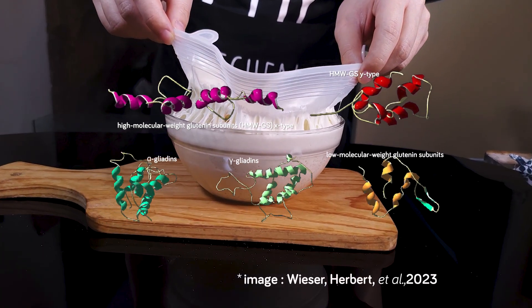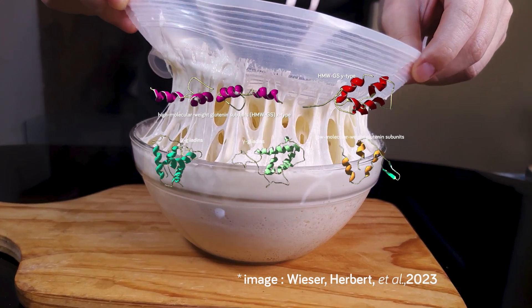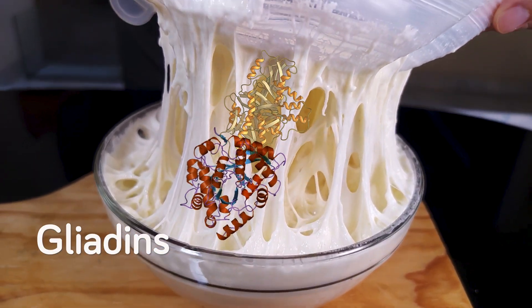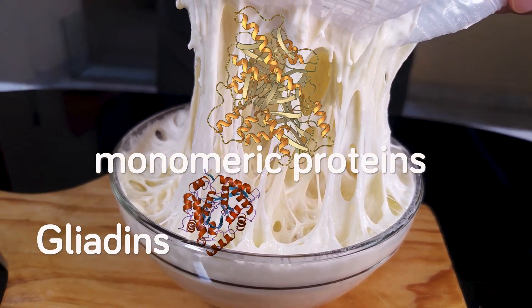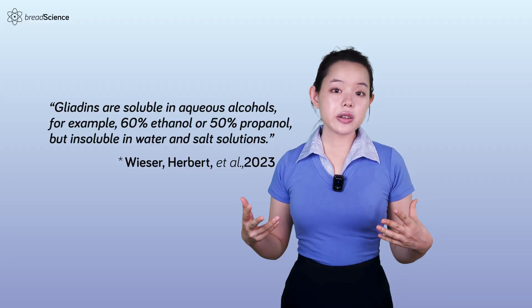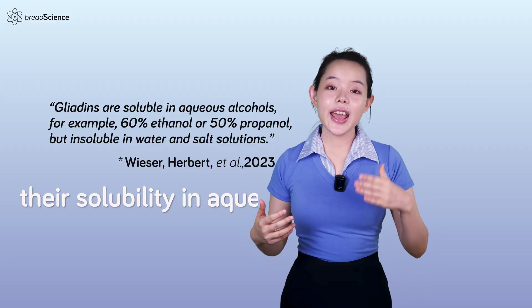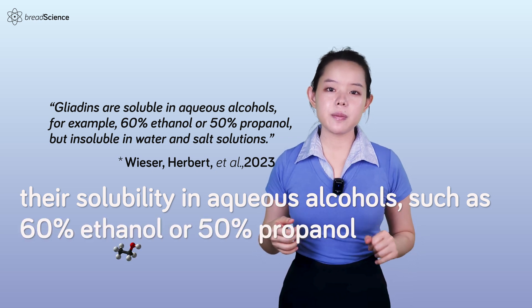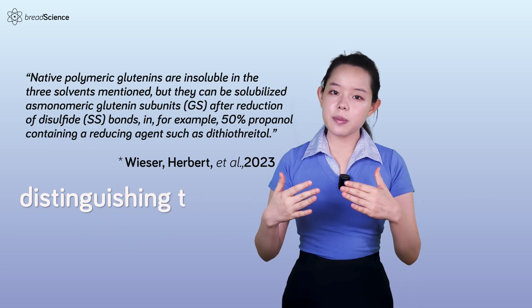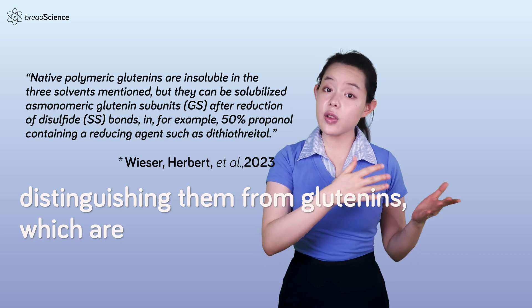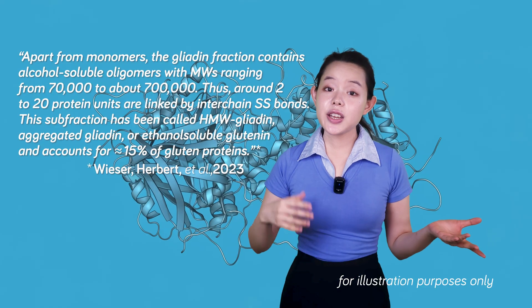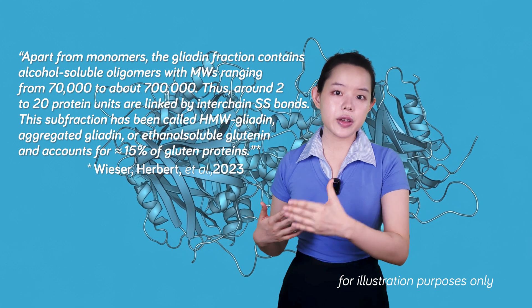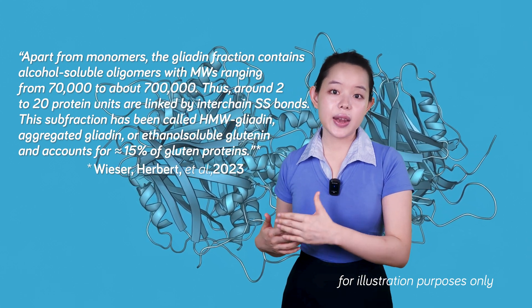While both glutenin and gliadin are essential, they contribute different properties to gluten. Gliadins are a major chain of monomeric proteins found in wheat gluten. They are characterized by their solubility in aqueous alcohols, such as 60% ethanol or 50% propanol, distinguishing them from glutenins, which are insoluble in these solutions. In addition to monomers, the gliadin fraction can contain alcohol-soluble oligomers known as high-molecular weight gliadins.